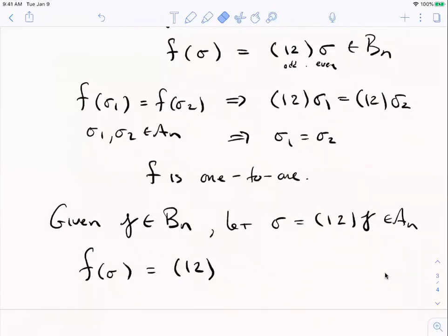F of sigma is one, two times sigma. Yeah. So that's one, two times one, two times gamma. But one, two and one, two are inverses of each other. So that's gamma. All right. So that shows that F is onto.